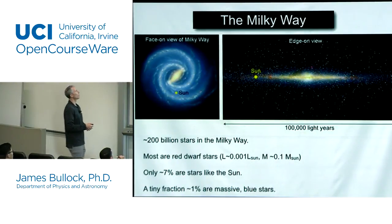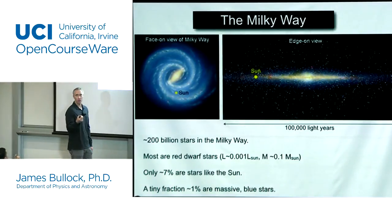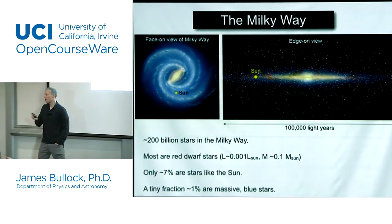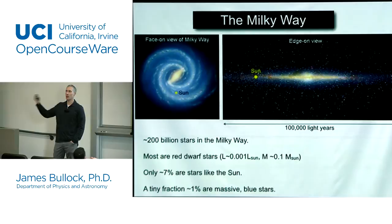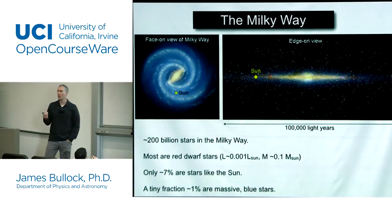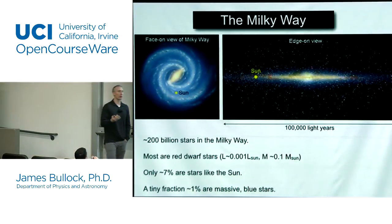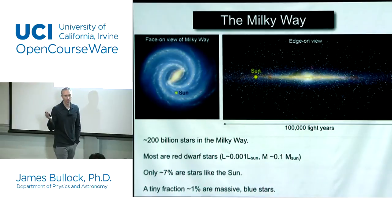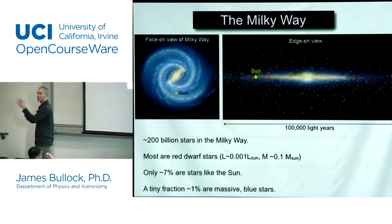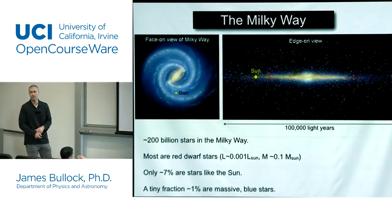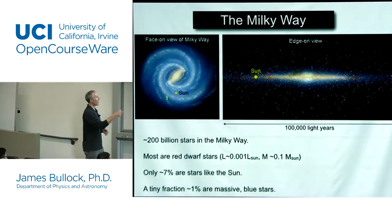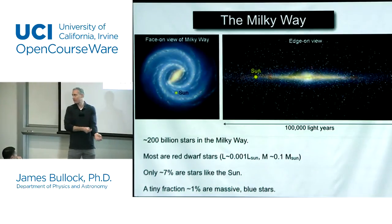Our galaxy has about 200 billion stars. Now most of the stars in the Milky Way are so-called red dwarf stars — they're little. There are way more small stars than big stars. Only about 7% of the stars in our galaxy are really like the sun. A lot of times you'll hear people say the sun is a typical star in a typical galaxy — that's not true. The sun is more massive than a typical star. Most stars are smaller than the sun, and a tiny, tiny fraction of stars are more massive than the sun and they shine blue.